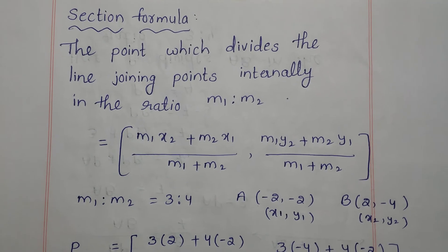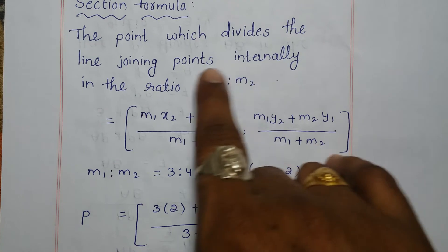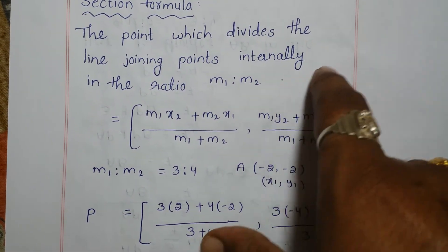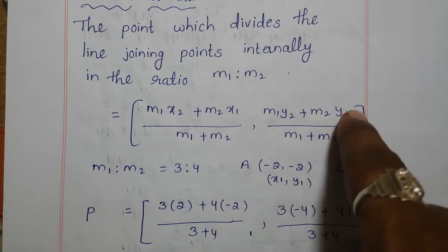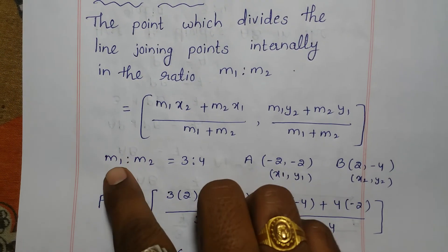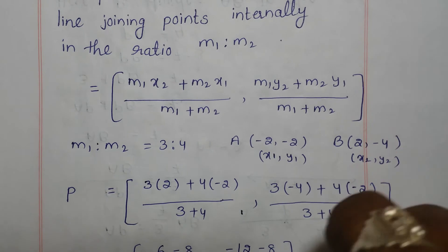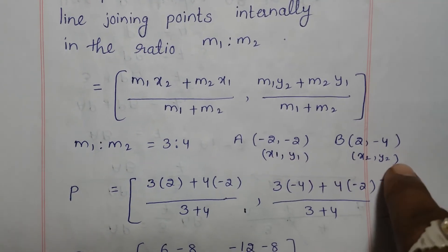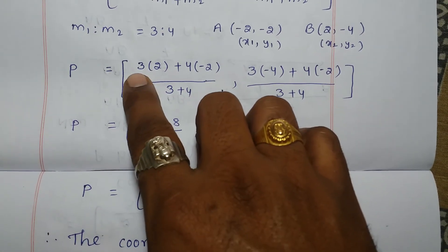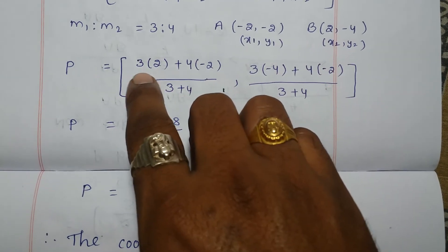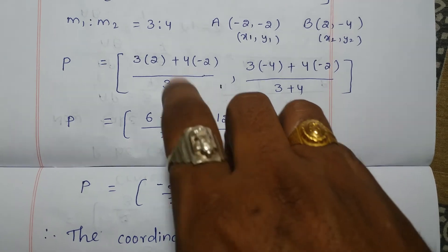To find the coordinates of P, we use the section formula. The point dividing the line joining two points internally in the ratio M1:M2 is given by: x = (M1·x2 + M2·x1)/(M1 + M2), y = (M1·y2 + M2·y1)/(M1 + M2). Here M1:M2 = 3:4, A is x1=-2, y1=-2, and B is x2=2, y2=-4.